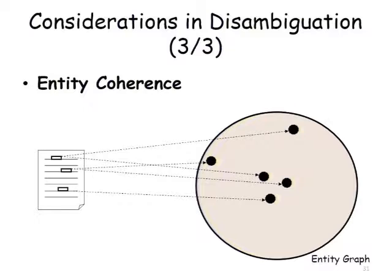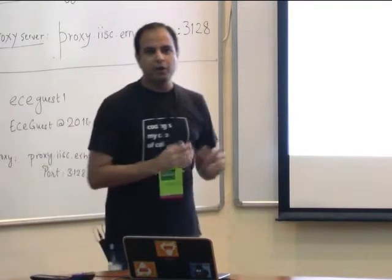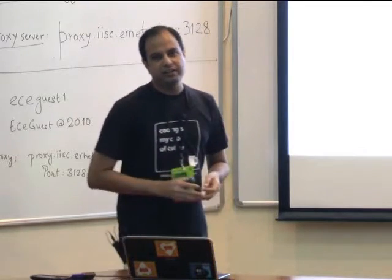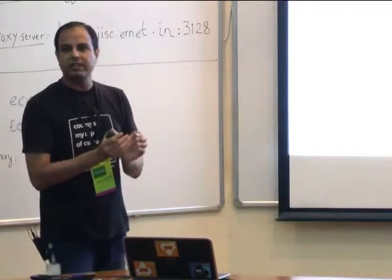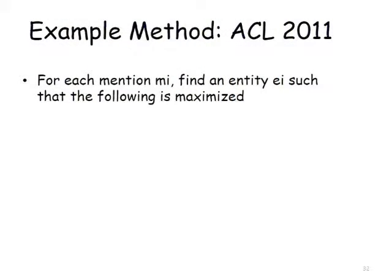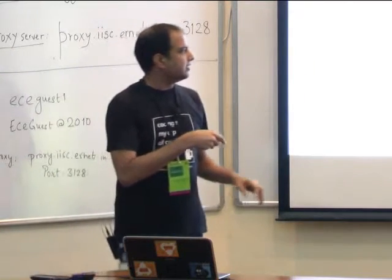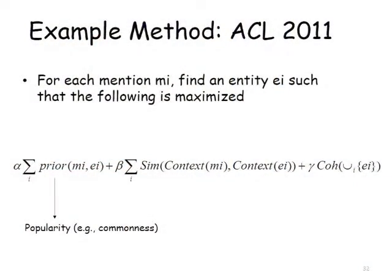The third feature is entity coherence: given a document with multiple mentions, you want the linked entities to be very close to each other in terms of semantic similarity. The semantic similarity could be how closely connected they are in a graph, or in terms of attributes they share. For each mention MI, find entity EI such that popularity, similarity between entity names and contexts, and coherence of all entities in the document are maximized together.